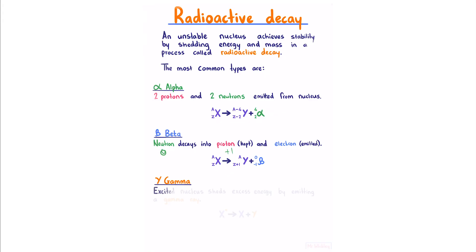Gamma decay occurs when an excited nucleus sheds excess energy by emitting a gamma ray. Starting with our nucleus, with this symbol to show that it's excited, following the decay, the nucleus emits a gamma ray and is now in an unexcited state.